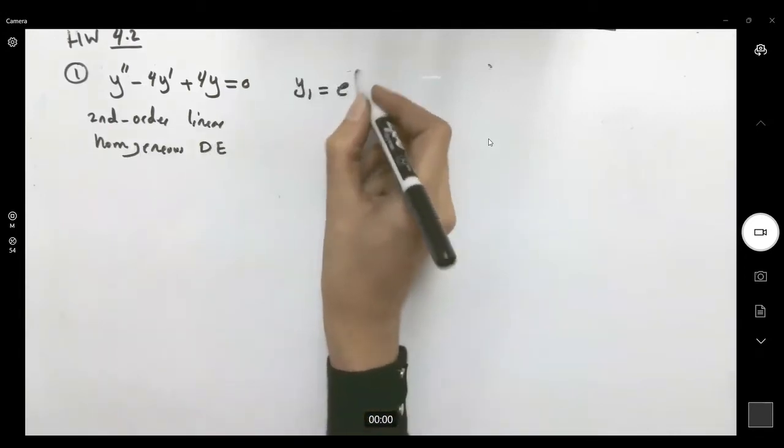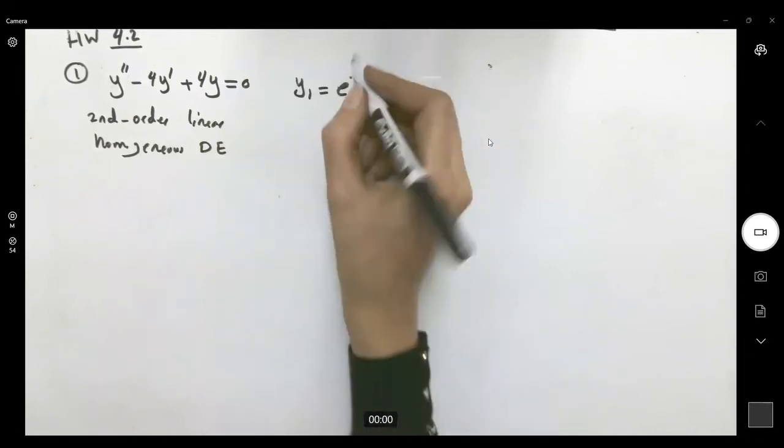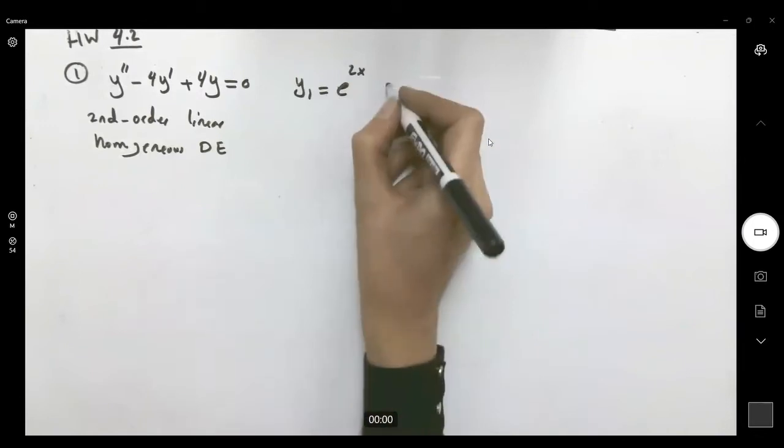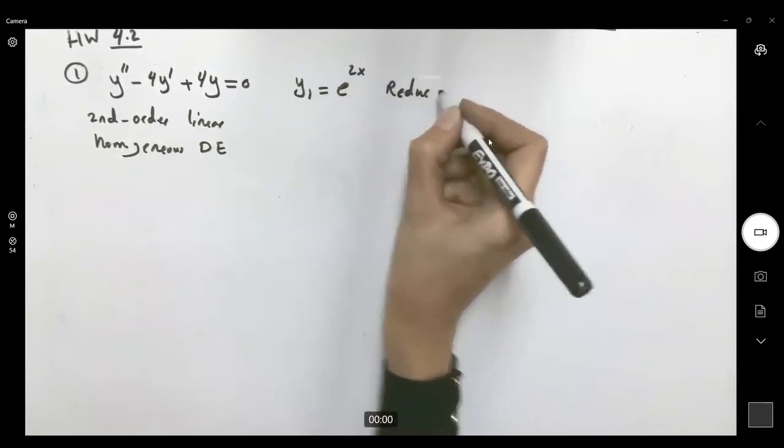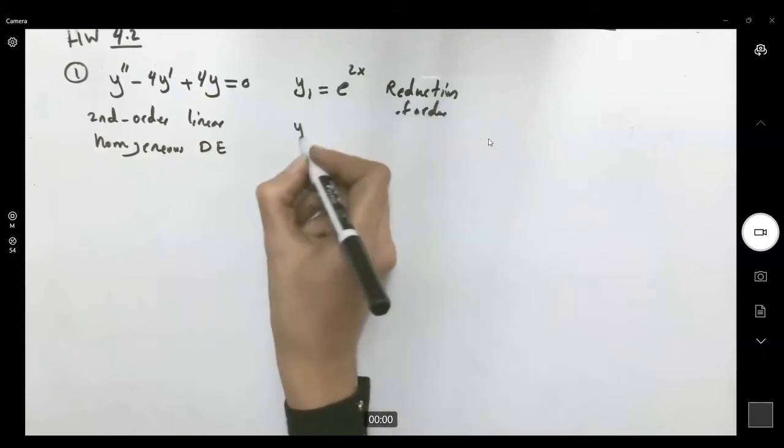It says the first solution is given to us, y1 equals e to 2x. And it says, use the method of reduction of order to find y2.